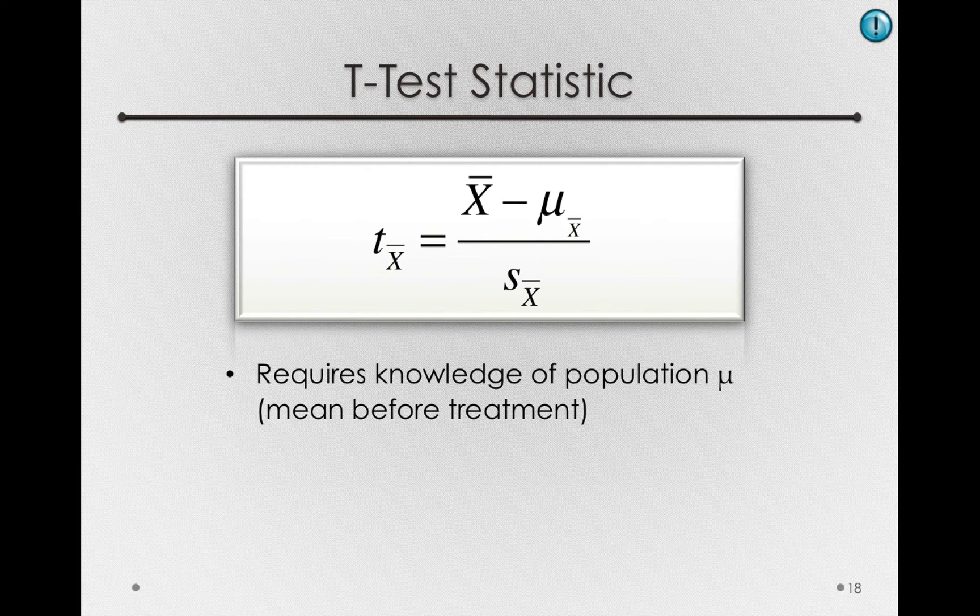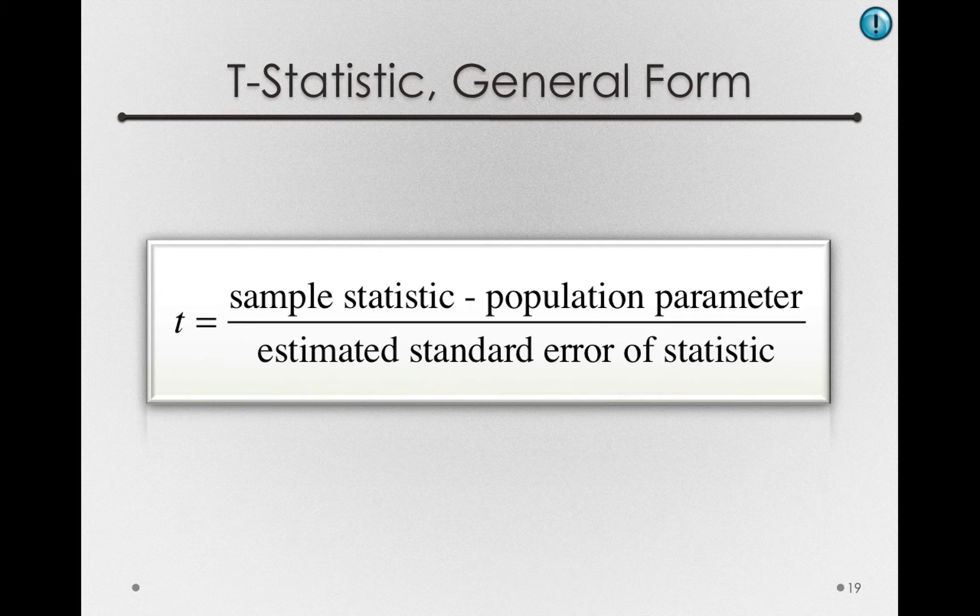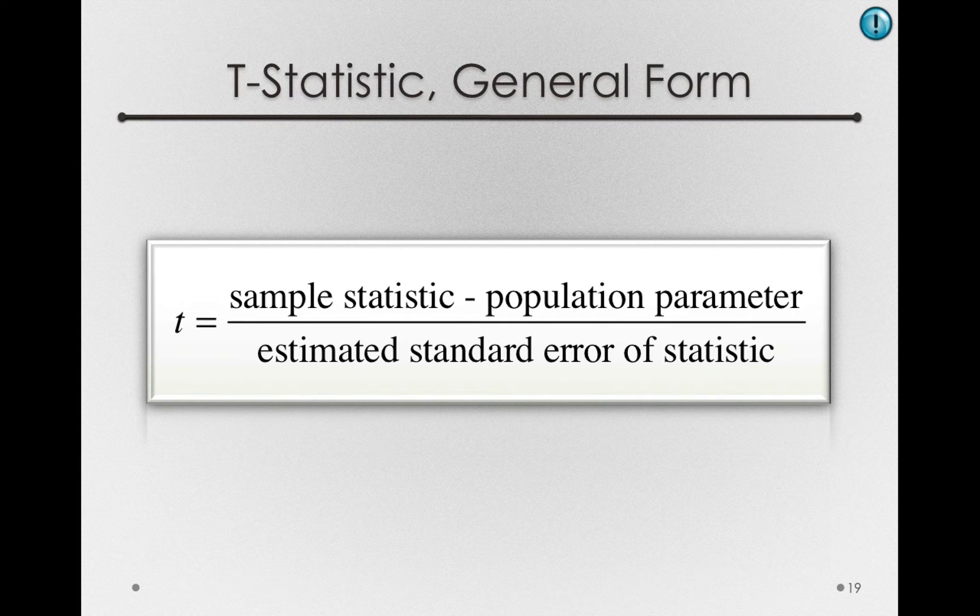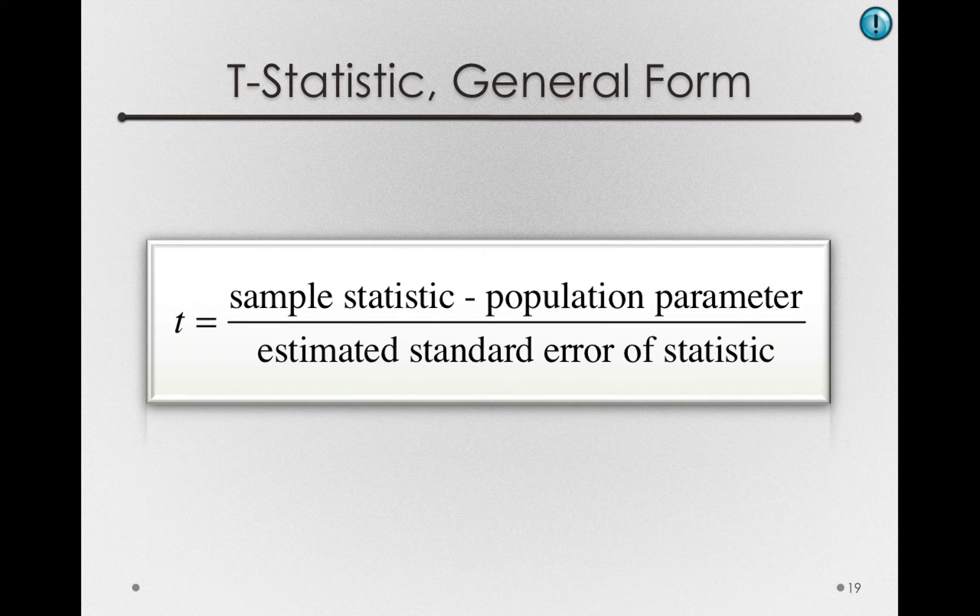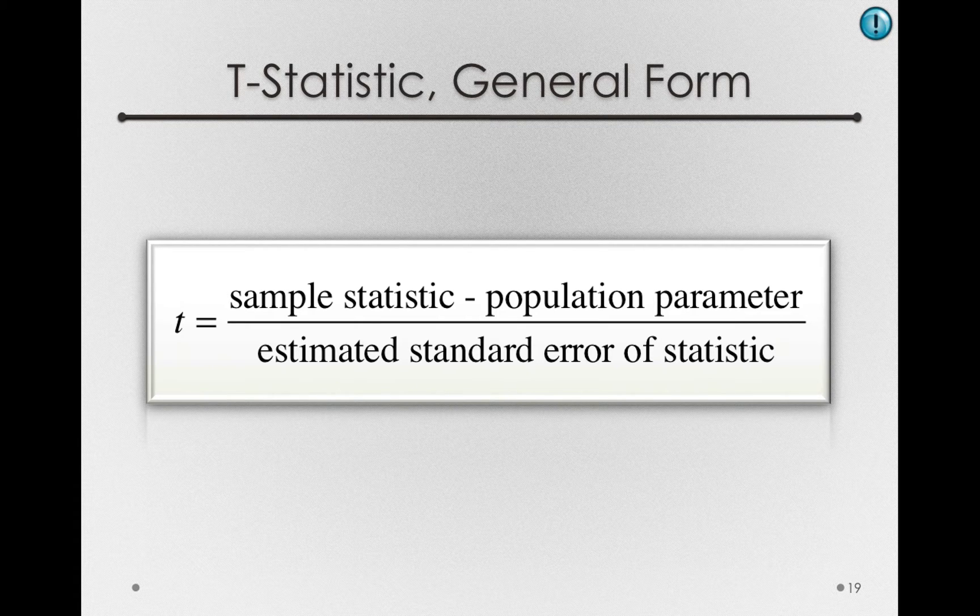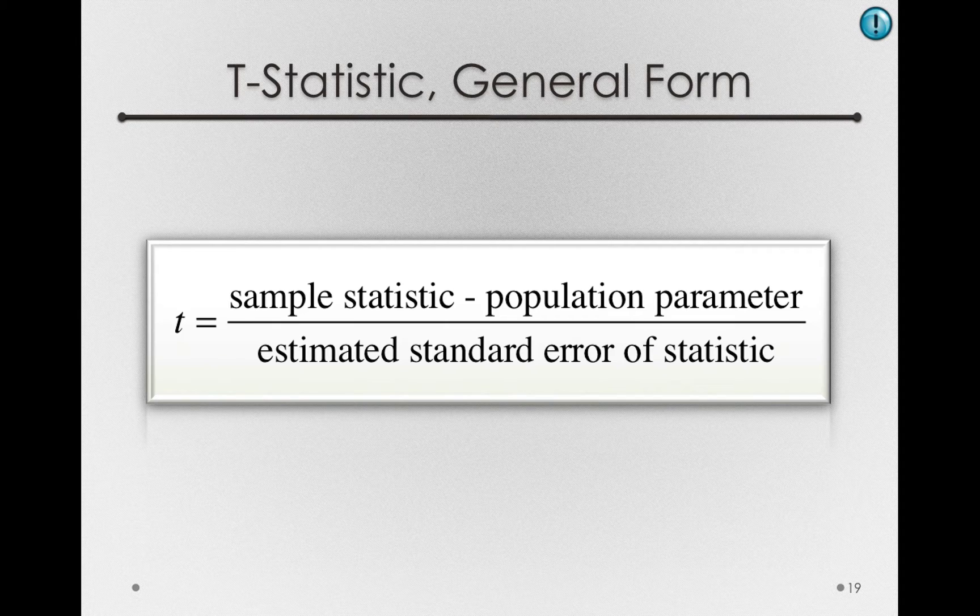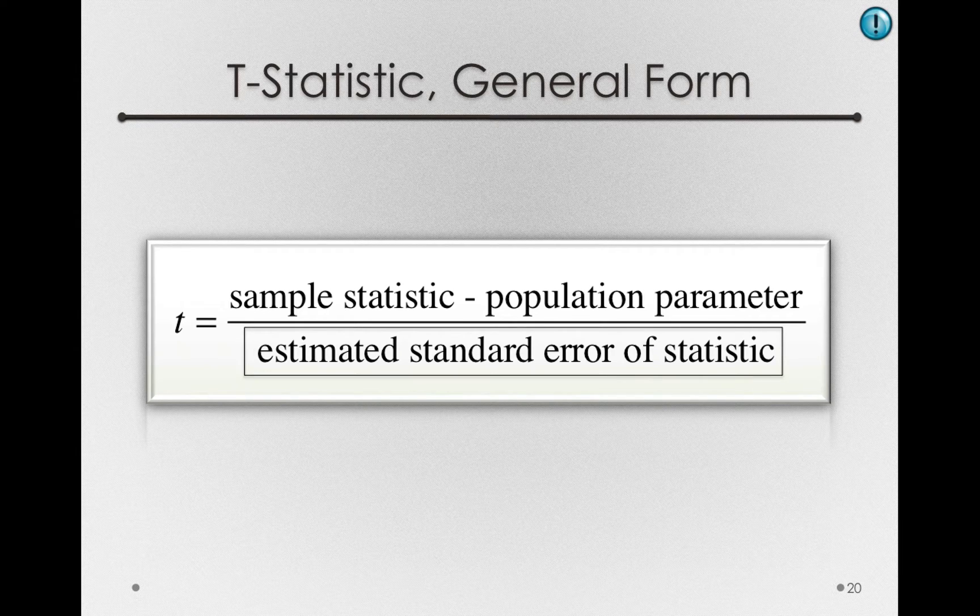This t-statistic is actually just one of many t-statistics we can form that follow a general form. A t-statistic is just when we have a sample statistic minus its corresponding population parameter divided by an estimated standard error of the statistic.